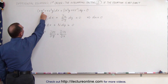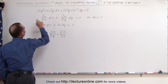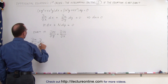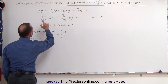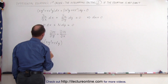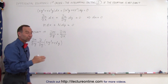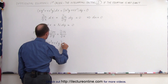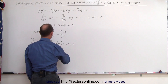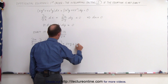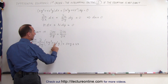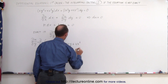Let's take the partial with respect to y of M. The partial of M with respect to y is equal to the partial with respect to y of the quantity xy² plus 4x²y. Remember, x is a constant here. So this equals 2xy plus 4x².